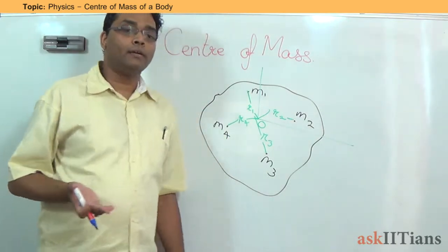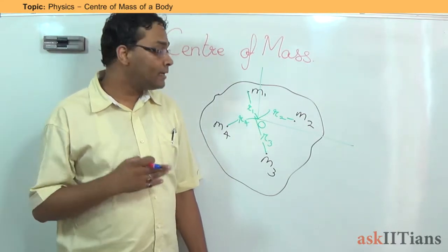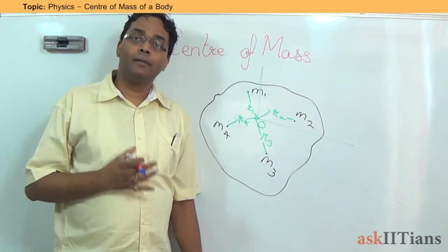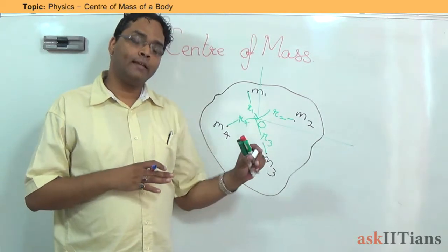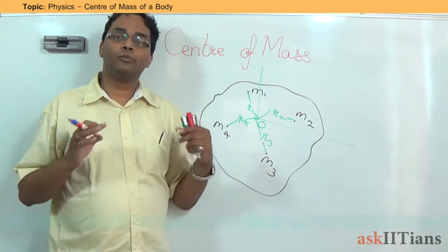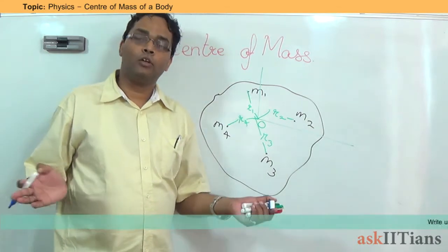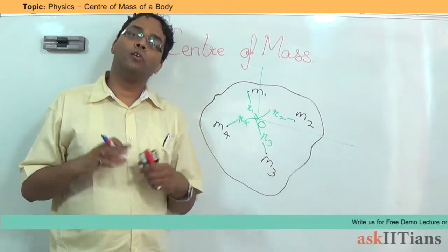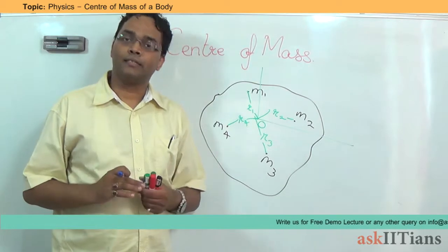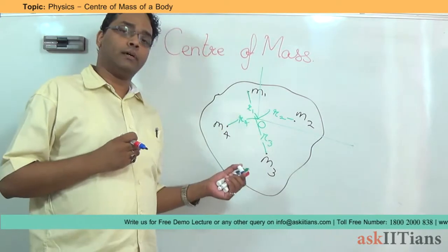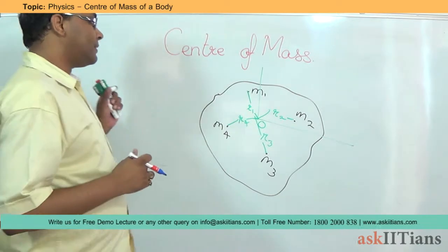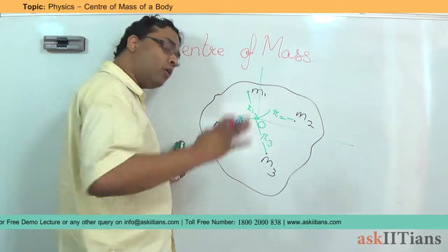Or in another way, we can put it this way, that the center of mass is basically a point wherein if you apply the force at that point, it is equivalent to saying that the force has been applied for the whole body. Because the center of mass is the point where the whole mass of the body can be said to be concentrated. So the whole mass of the body can be said to be concentrated at the center of mass. So it is equivalent to saying that the whole force has been applied on the object itself.